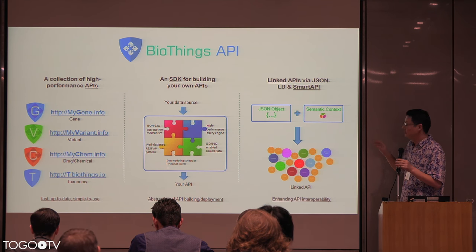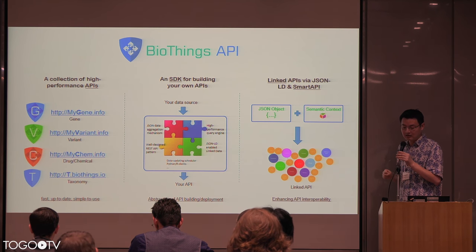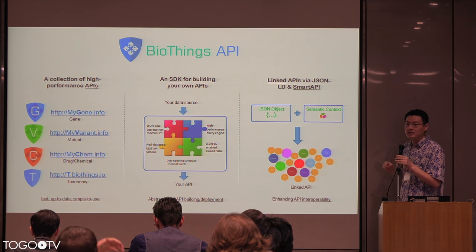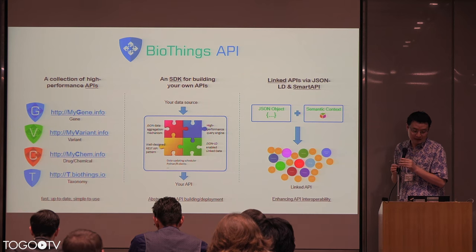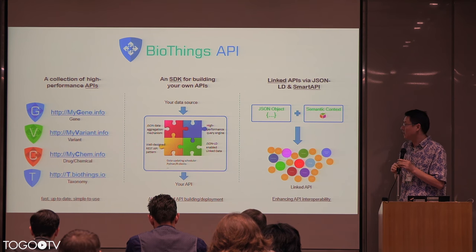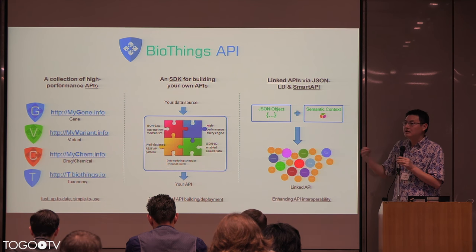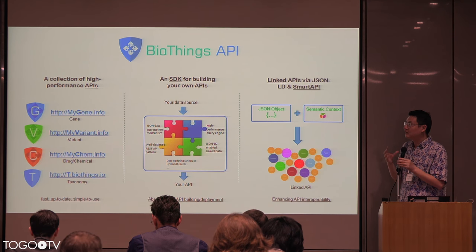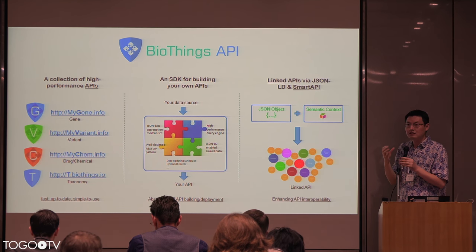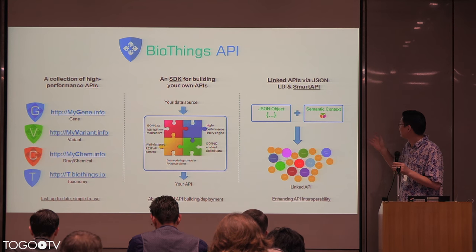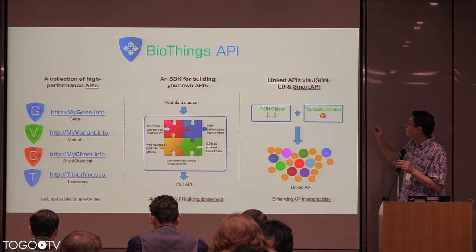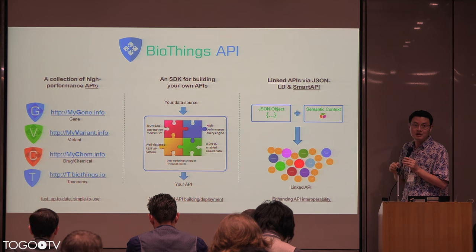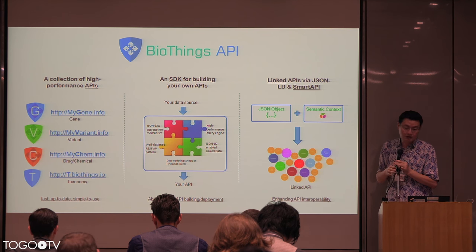The third part is going to be my main focus for this talk: we want to make these APIs work together as FAIR APIs and interoperable APIs. We built APIs, and other people build all kinds of APIs as well. We need some kind of mechanism to link them together. That's how this is the marriage between the BioThings API and the Smart API that Michelle and I started.